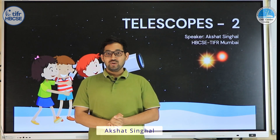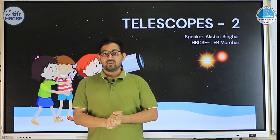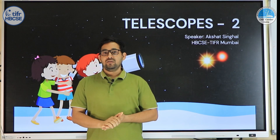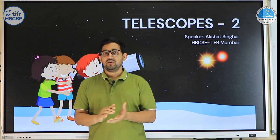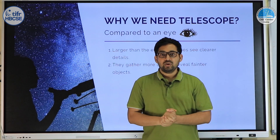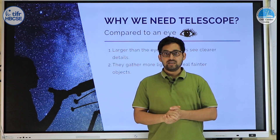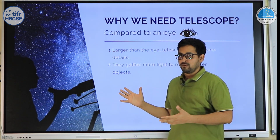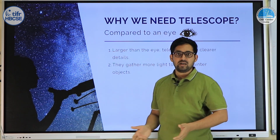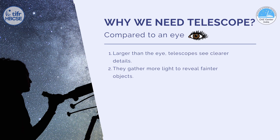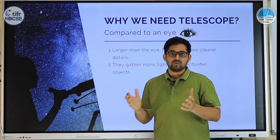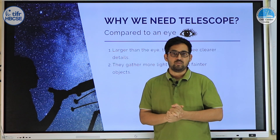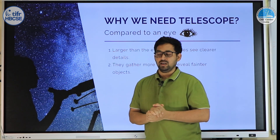Hello students and teachers. This video is a continuation of the previous video on telescope design. Here we will focus on different parameters such as the limiting magnitude and resolving power of a telescope. So let's dive in. First, let's recall why we need a telescope compared to our eye. Telescopes have a much larger aperture and diameter, which helps in two ways: it allows a much clearer image of distant objects, and because of its larger collecting area, it collects more light, giving more detail and allowing us to see fainter images.